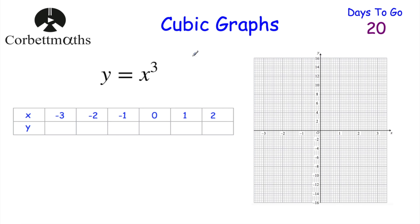We've looked at reciprocal graphs, and we're going to look at quadratic graphs in more detail tomorrow. Quadratic graphs are where the highest power of x is squared. Now we're going to look at cubic graphs, where the highest power of x is cubed - so y equals x cubed. Work out the y coordinates for that graph.